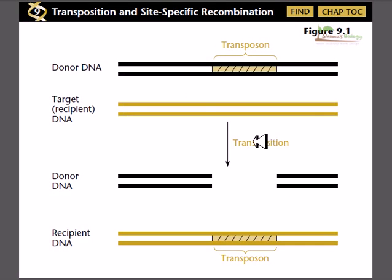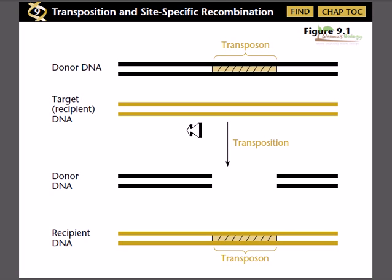Welcome. In this video we'll be talking about transposons and the basic events of transposition. Transposition, as the name suggests, is the changing of position of genes from one place to another — for example, a gene within a DNA can be transferred from that place into another place. Now let's talk about the basic process of transposition.